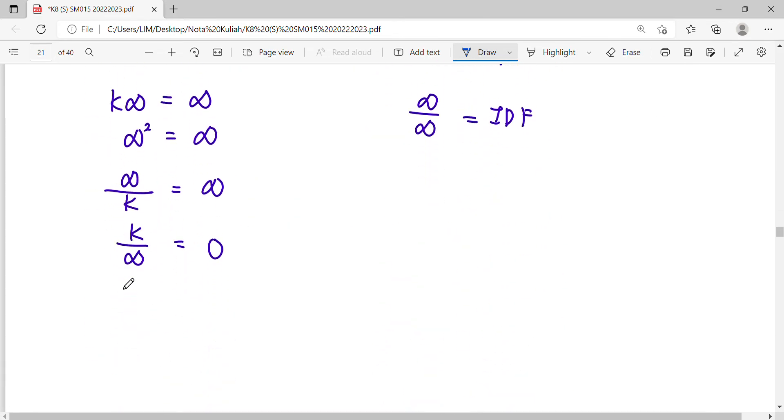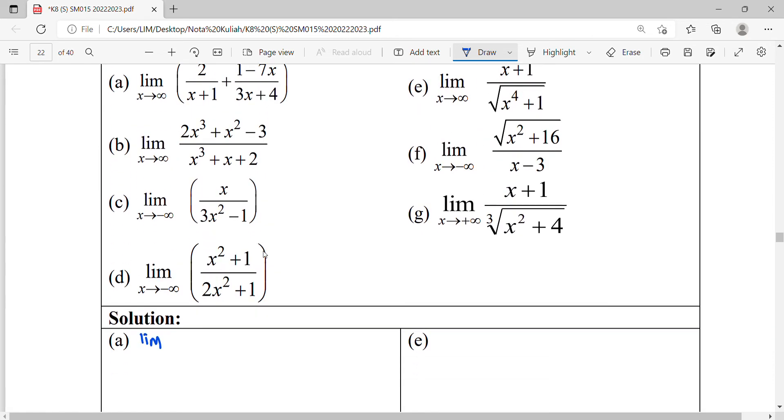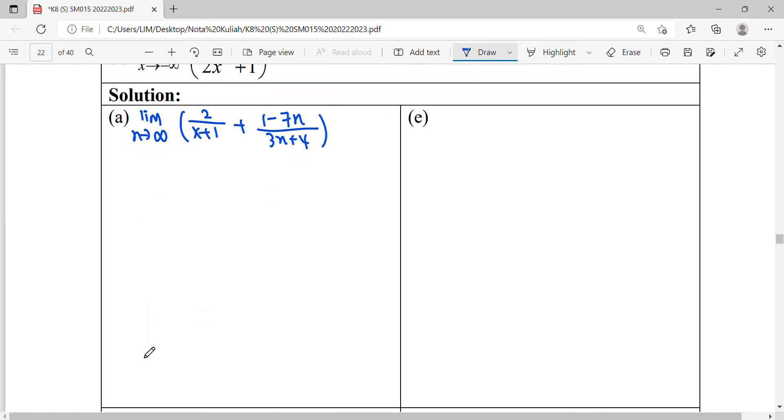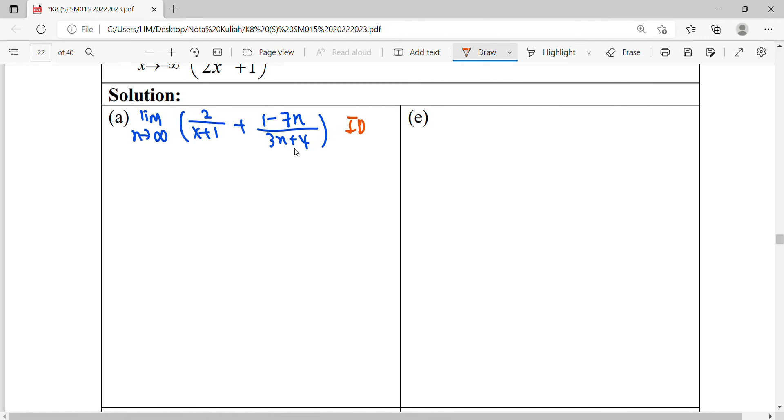We look at example 14A here. The limit as x approaches infinity of 2/(2x+1) plus (1-7x)/(3x+4). Our first intention is to substitute infinity to see if it's IDF. When you substitute infinity, 2 over infinity is zero, but this becomes infinity over infinity, which is IDF. In the case of IDF, we divide by the highest power of x.